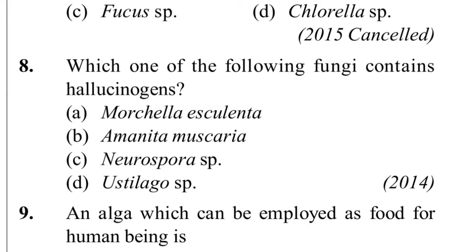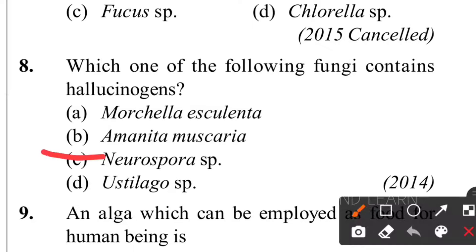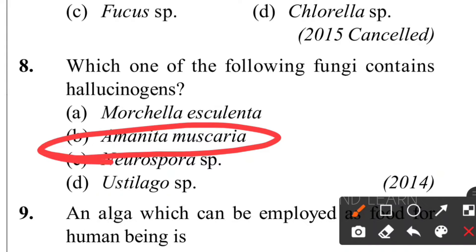Eighth question: which of the following fungi contains hallucinogens? The answer is Amanita muscaria. It is a type of Basidiomycetes - a poisonous mushroom with hallucinogenic properties. It produces a toxic alkaloid that mimics the effect of acetylcholine. This was from previous year questions in Human Health and Disease. Amanita muscaria has the effect of acetylcholine, which is why they are hallucinogens.